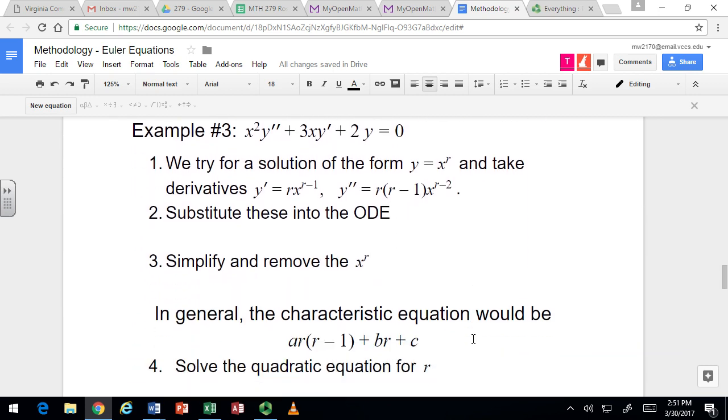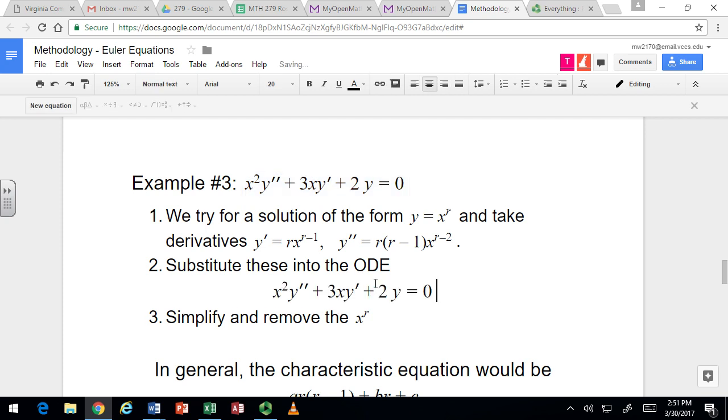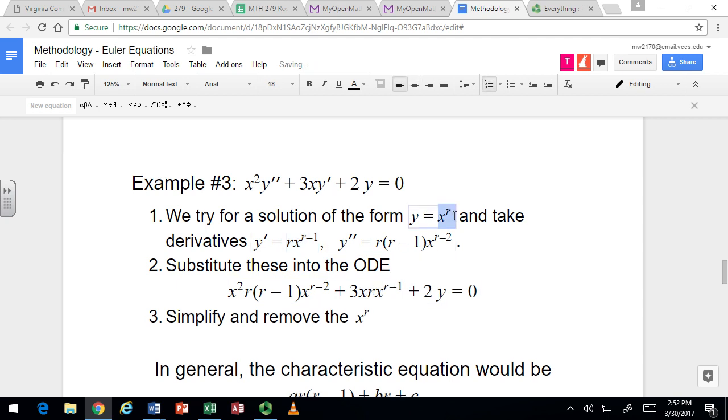Alright, so one more time for the cheap seats in the back. We've got another Euler equation. And we substitute in the same form of the solution here and do the same type of simplification. And we'll end up with r times r minus 1 plus 3r plus 2 equals 0.